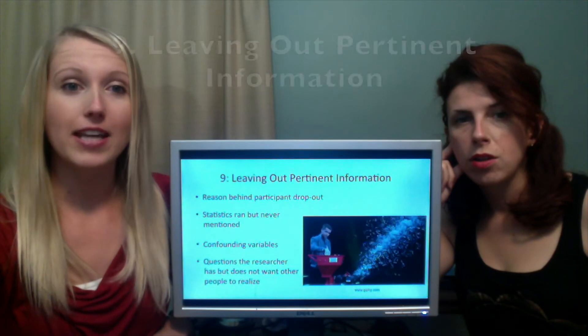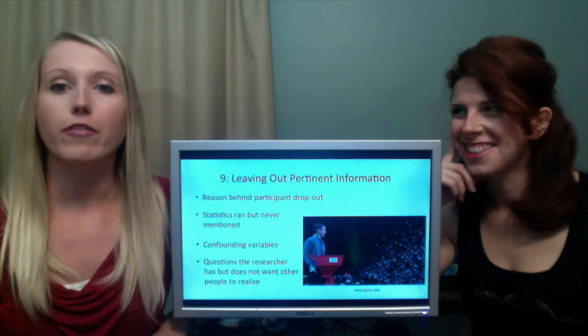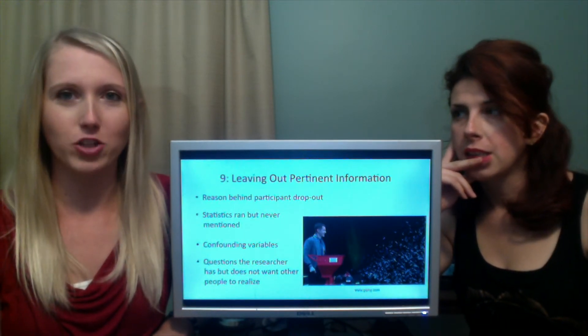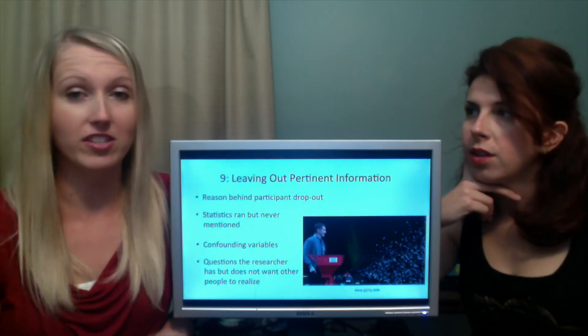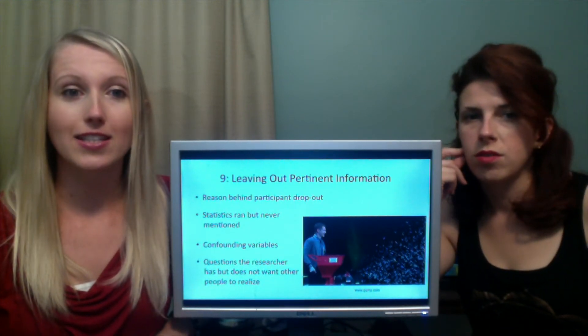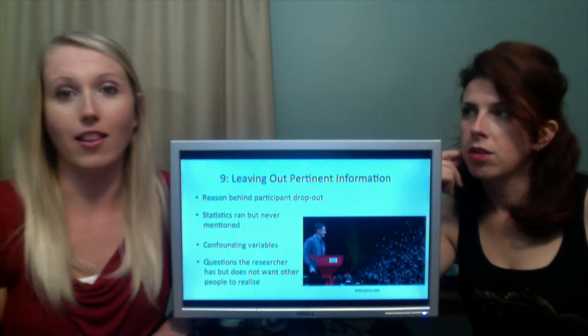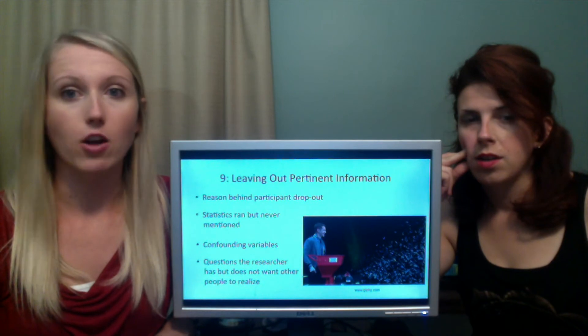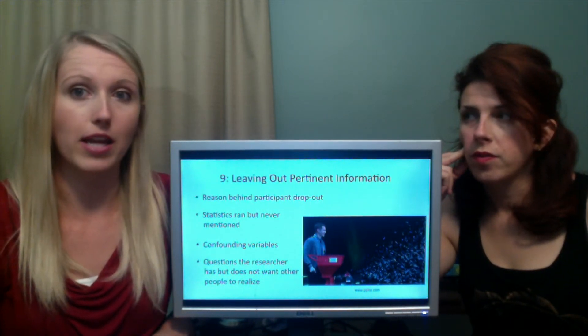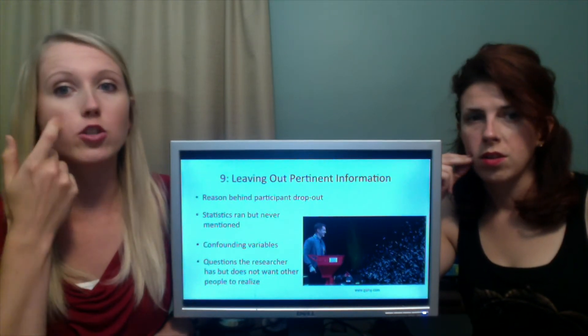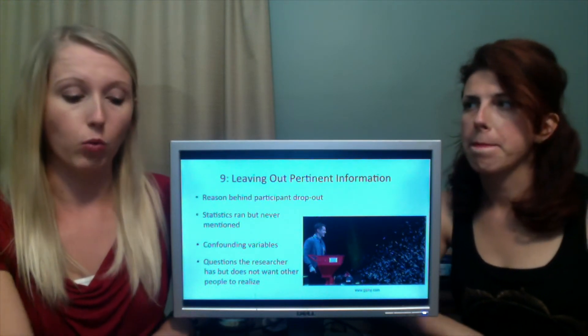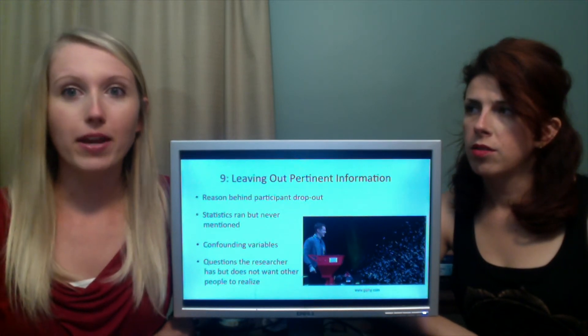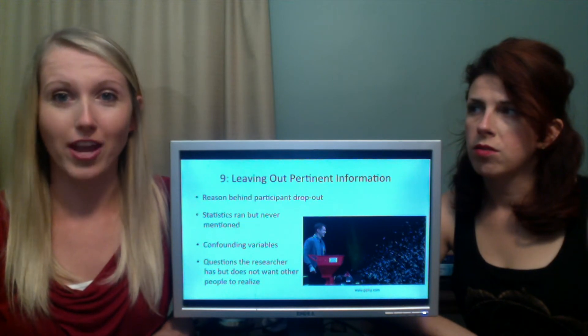Speaking of missing out, missing out or leaving out pertinent information. Why, if a participant dropped out of the study, why did they drop out? Did they drop out because it was too far of a drive? Did they drop out because the medication was making them so sick they couldn't even leave their house? They don't have to tell you that. They don't have to tell you why. Statistics that they ran but they never mentioned. They may run certain statistics and not like the results and not put it in their results or discussion. Confounding variables, which we already talked about. They don't have to mention those either. And then questions the researcher has. The researchers know a lot about this topic. And when they come up with certain results, it may raise questions for them. But they may not want you to know that because they don't want to lose their funding for additional research. And they don't want to be wrong.